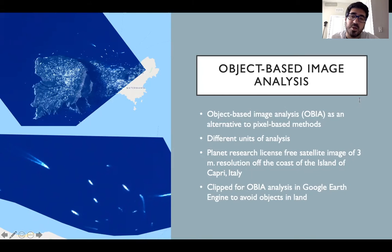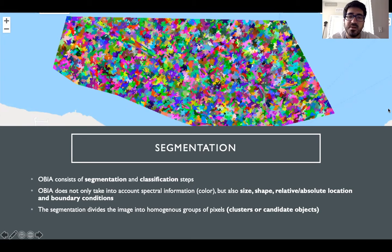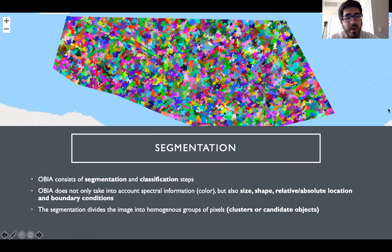We first clipped a section of interest of the image that did not contain any land. OBIA consists of two steps: segmentation and classification, and does not only take into account spectral information — that is color — but also size, shape, relative and absolute location, and boundary conditions. The segmentation divides the image into homogenous groups of pixels, which are clusters or candidate objects that you can see in the image above.